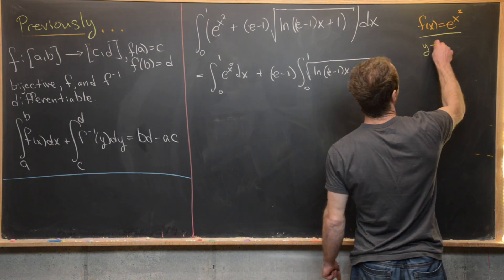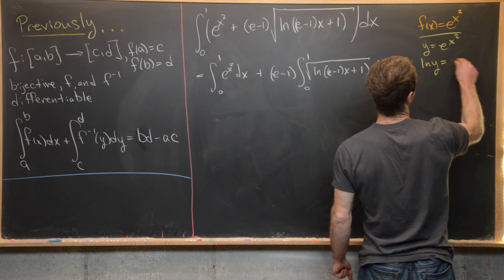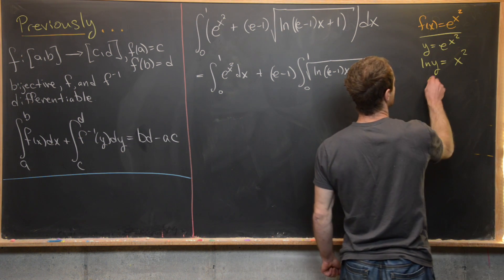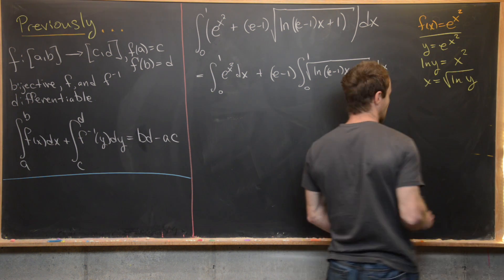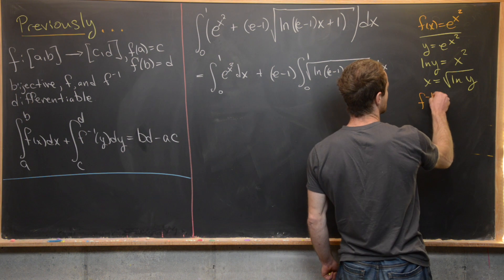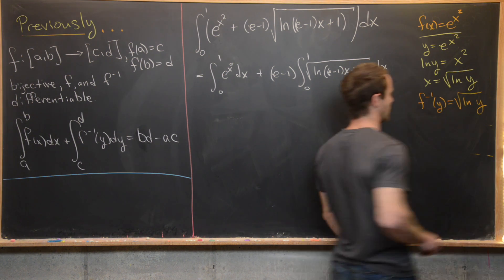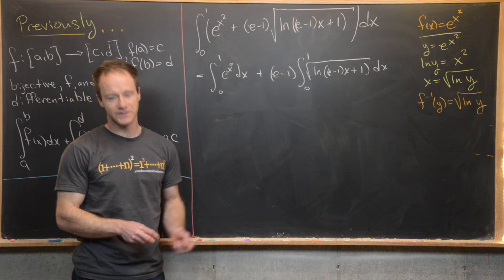So first I'll set y equal to e to the x squared. That makes natural log of y equal to x squared, x equal to the square root of the natural log of y, but renaming we have f inverse of y equals the square root of the natural log of y. So that's good news.